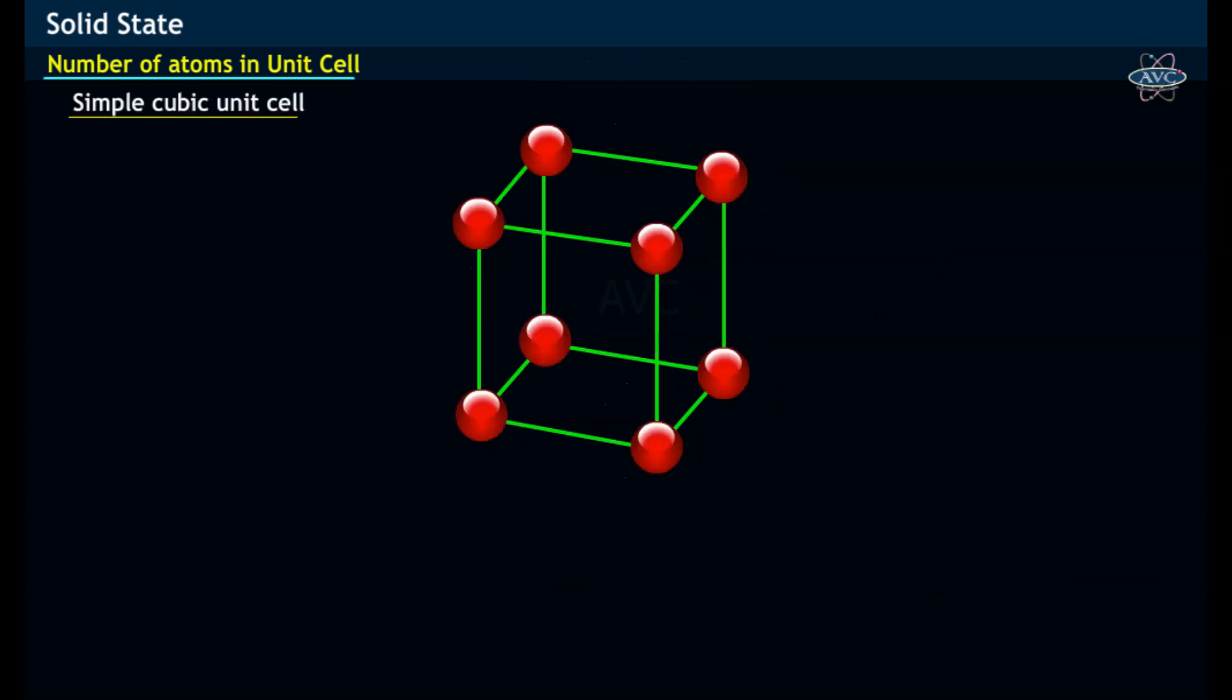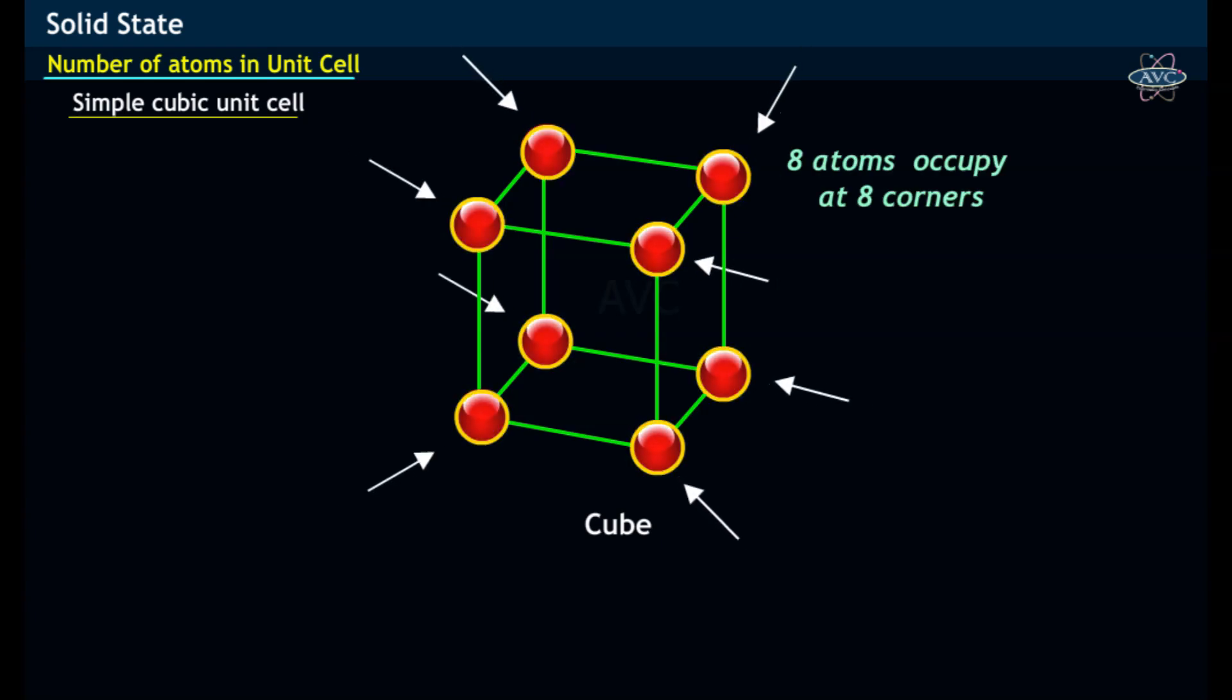Simple and Primitive Cubic Unit Cell. A simple cubic unit cell consists of a cube with one atom occupying at each corner. This means that eight atoms occupy at eight corners of a simple cube.